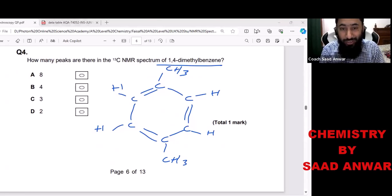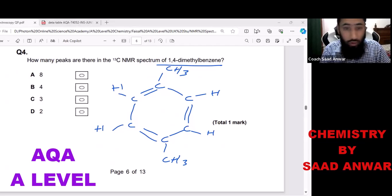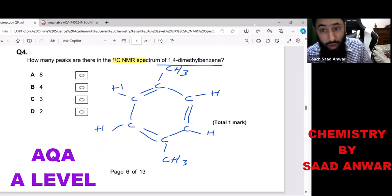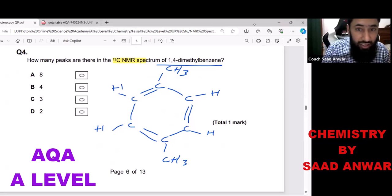Hello everyone, you are watching my YouTube channel Chemistry by Saad Anwar. This is a past paper challenging AQA A-level chemistry question relevant to carbon-13 NMR. How many peaks are there in the carbon-13 NMR spectrum of 1,4-dimethylbenzene? Let's try to conquer this question.